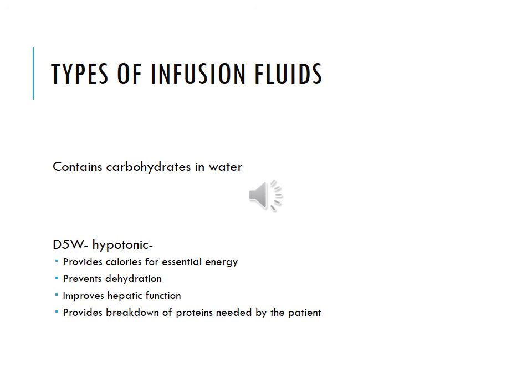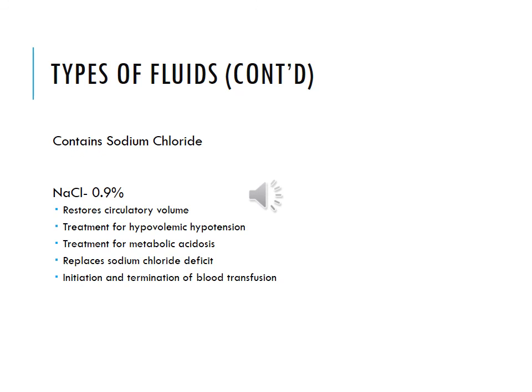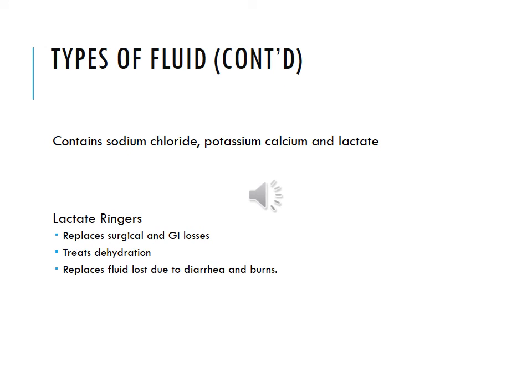Types of infusion fluids: they contain carbohydrates and water. D5W, which is hypotonic, gives calories for essential energy, prevents dehydration, improves hepatic function, and provides a breakdown of proteins needed by the patient. Normal saline (0.9% sodium chloride) restores circulatory volume, treats hypovolemic hypotension, treats metabolic acidosis, replaces sodium chloride deficit, and is used to initiate and terminate blood transfusions. Lactated Ringer's contains sodium chloride, potassium, calcium, and lactate. It's used during surgery, replaces surgical and GI losses, treats dehydration, and replaces fluid loss due to diarrhea and burns.